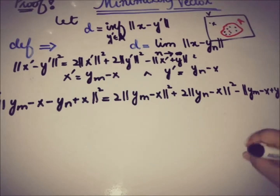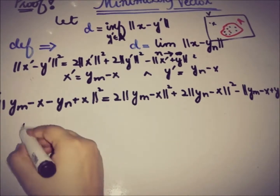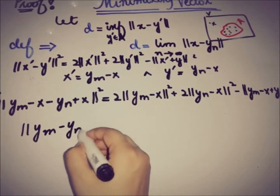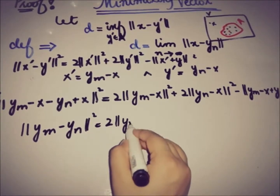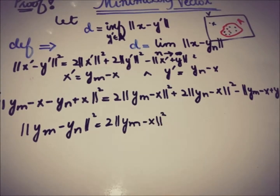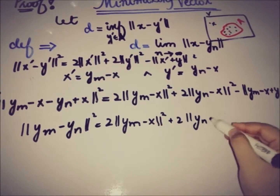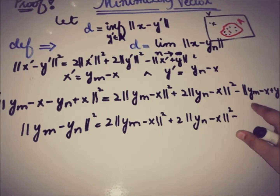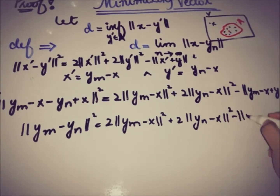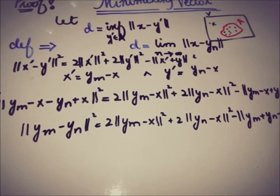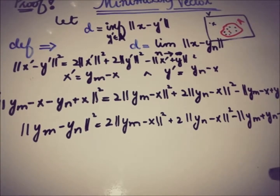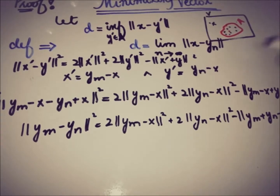After substitution and simplification, the X terms cancel appropriately: the first term becomes ||Y_m - Y_n||², the middle terms give 2||Y_m - X||² + 2||Y_n - X||², and the last term becomes ||Y_m + Y_n - 2X||².